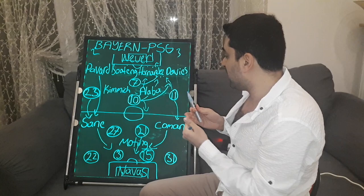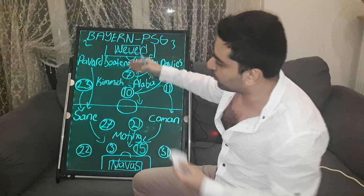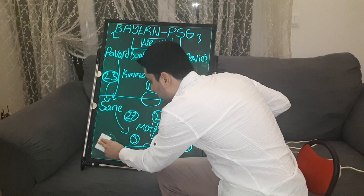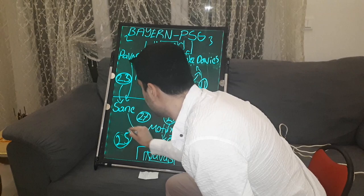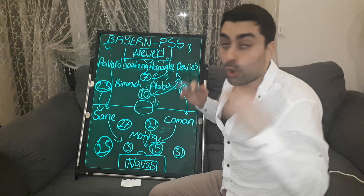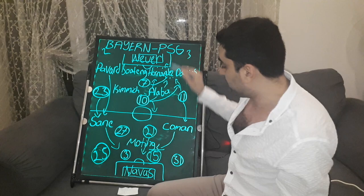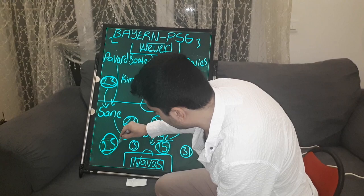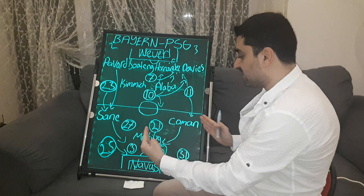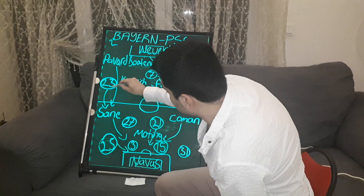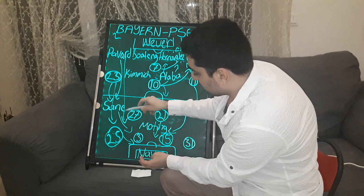Paris Saint-Germain started the second half with a substitution — left-back Diallo came off and Mitchell Baker came on as left-back. In the first half, Bayern had developed dangerous attacks from the right with Sané and Pavard. Now in the second half, Bayern continued to exploit PSG's left side, as Mitchell Baker tucked inside, making PSG's defensive line narrower. Sané and Pavard forced that left flank and got into the box.